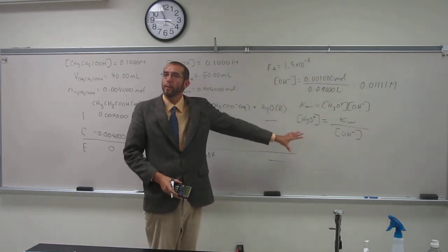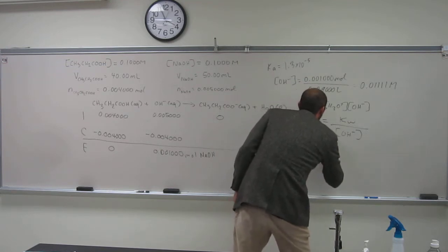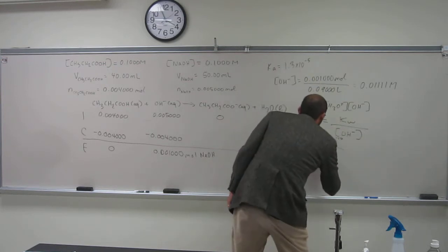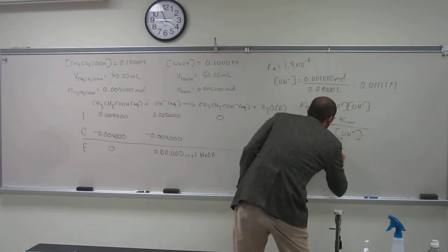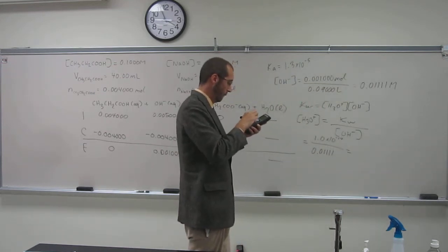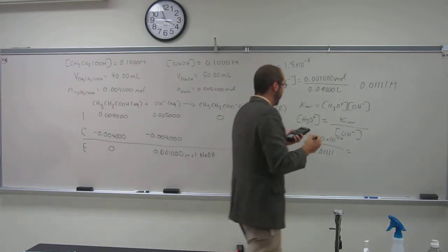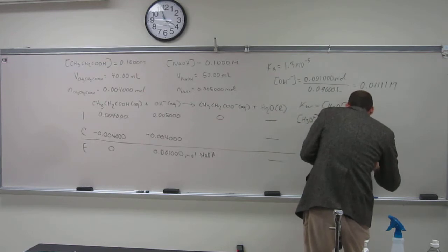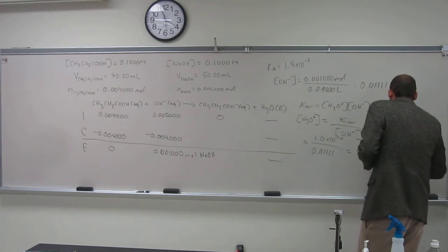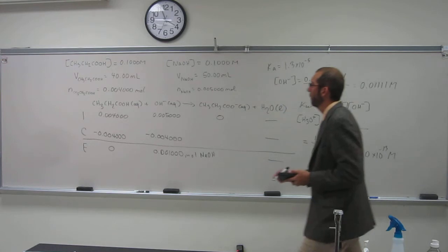Okay, so H3O plus equals Kw divided by concentration of OH minus. Do we have both of those things? Yes, right? So that equals 1.0 times 10 to the negative 14 divided by 0.011111, which equals 9.0 times 10 to the negative 13th molar. Okay? So how do I get the pH from that?